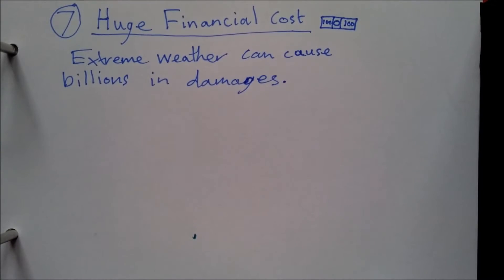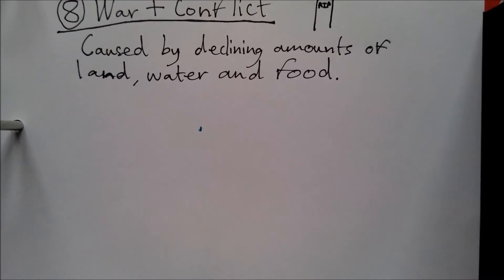Number 7: Huge financial costs. Extreme weather can cause billions in damages throughout the world.